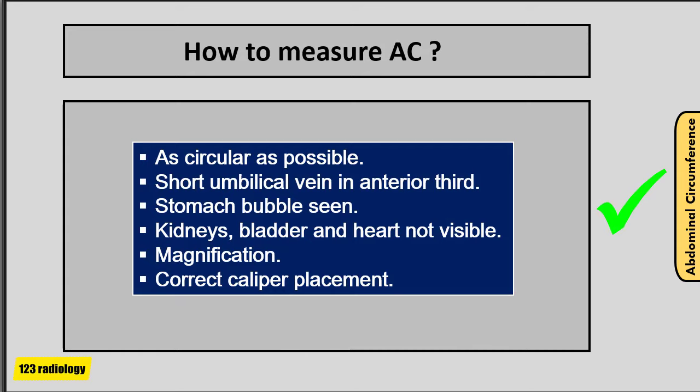To summarize abdominal circumference measurement: obtain a section as circular as possible. The short umbilical vein should be in the anterior third. The stomach bubble should be seen. Kidneys, bladder, and heart should not be visible. Magnification is important. And correct caliper placement is essential.